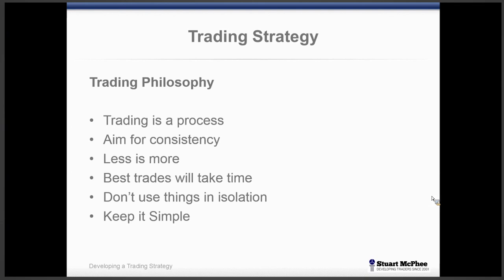I don't believe in using things in isolation. A doji candlestick pattern is one of my favourite candlesticks — it's a great indication of a reversal signal. A doji has basically no range between open and close, but we have a range between high and low and it ends up in the middle. It represents indecision. When you see those after a good short-term up or downtrend, prices often reverse. It's a really effective signal. But you're not going to trade every single time you see a doji.